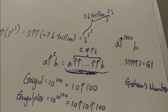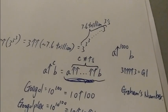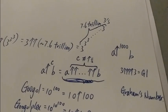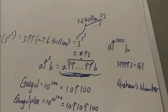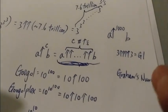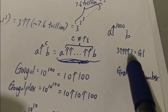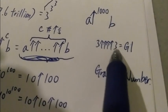The googolplex is a number that you cannot even write out in our observable universe. I mean, our universe is just too small for us to write out this number here. But yet, this is a very short thing.